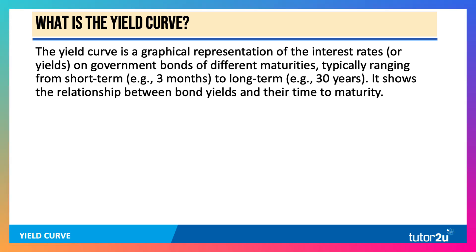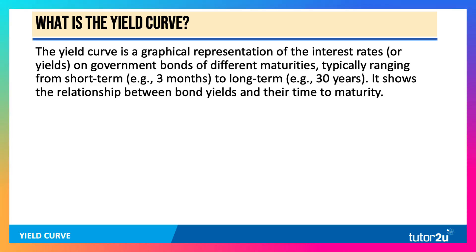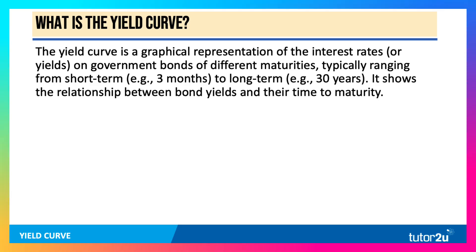A maturity is when a bond is repaid. So if I issue a one-year bond, speaking on the 2nd of March 2025, I repay the bond on the 2nd of March 2026. So the maturity is when the bond is repaid, and it varies from short-term bonds of 3 months to long-term, 30 years or more.